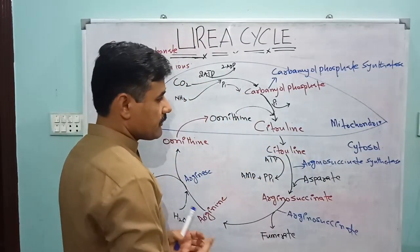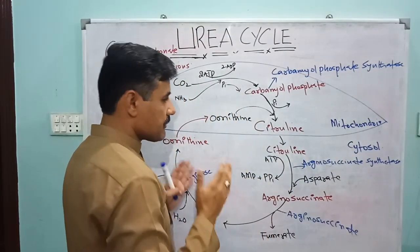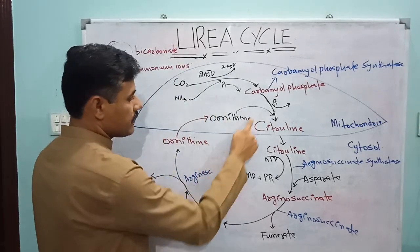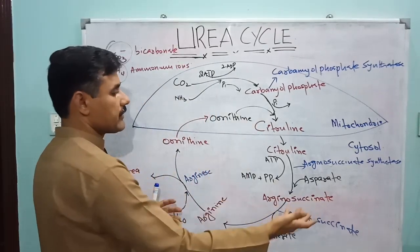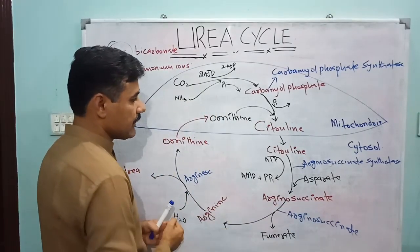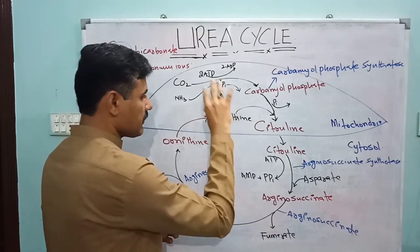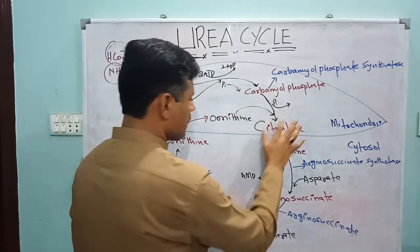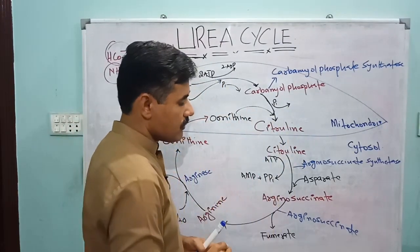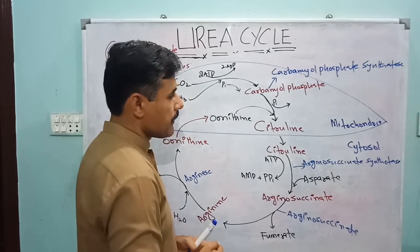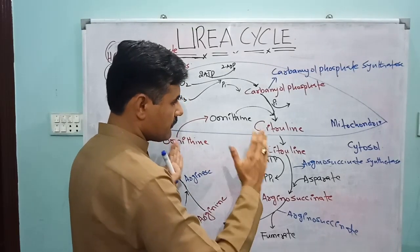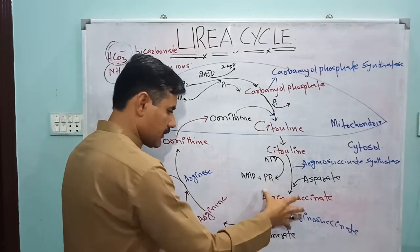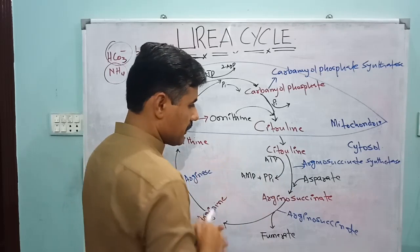Carbamyl phosphate, synthesized in the mitochondria, attacks ornithine, which is the precursor of the cycle. It takes ornithine, and when it reacts with ornithine, it synthesizes citrulline. This entire process takes place in the mitochondria.